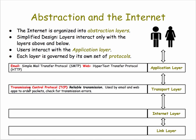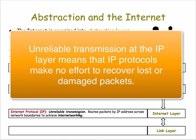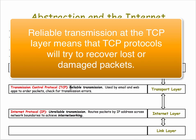On the next level down, you have the transport layer with the Transmission Control Protocol, or TCP. This is for reliable transmission between sender and receiver — it's used by email and web apps. What this layer does is break messages into packets, organize the packets, and then pass them on to the internet layer. The internet layer is managed by the IP protocol, which routes packets through the internet using IP addresses of the sender and receiver. This is called an unreliable transmission, meaning if packets get lost, they're simply ignored — it's up to TCP to detect those losses and recover from them.